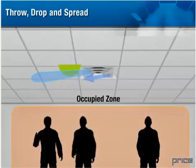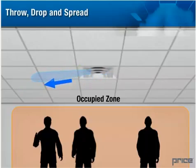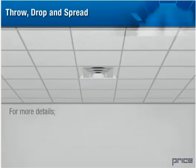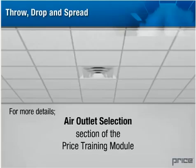Good air distribution design makes use of room surfaces to help keep the supply air outside the occupied zone. Price diffusers are designed to take advantage of the Coanda effect by producing it within the diffuser, helping discharge the air in the proper direction. Temperature, spread, and surface effect are just a few of the factors that affect throw and drop. For more details, refer to the air outlet selection section of the Price training module.